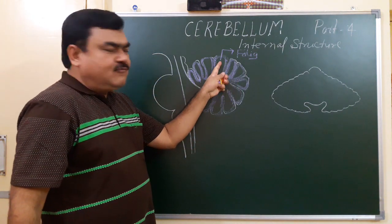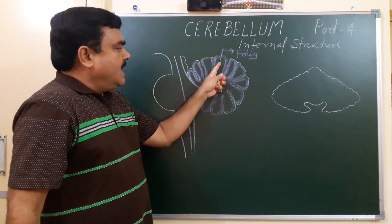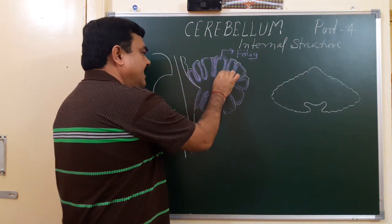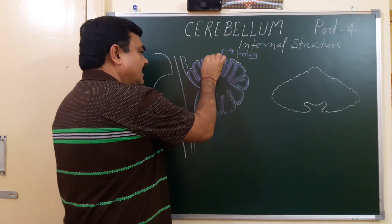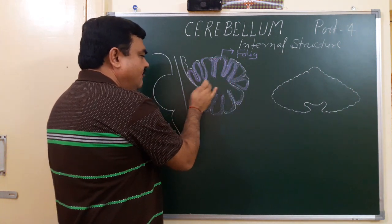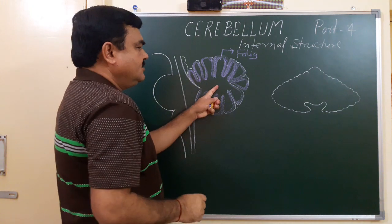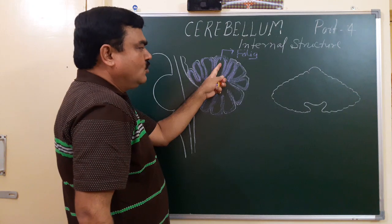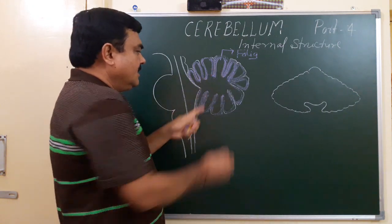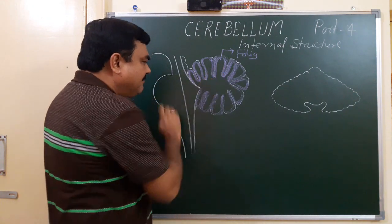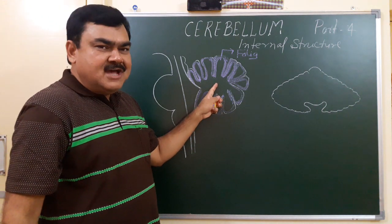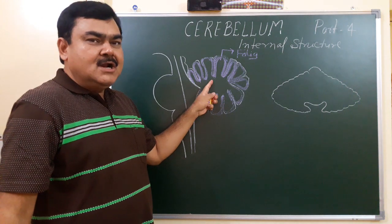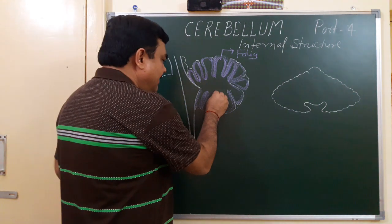The core of the folia has white matter. So in the peripheral part, this is gray matter, and in the central part, this is white matter — the extension of white matter present in the core of the folia. This white matter gives the appearance of a branch of a tree, also known as arbor vitae cerebellum.